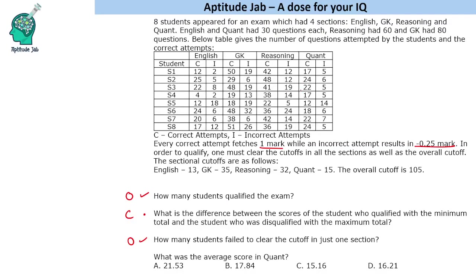The average score in Quant is a light calculation — you can just find correct and incorrect totals and compute it. The score difference question is a heavy calculation. In an examination you should attempt the observation-based and light calculation questions, and skip the heavy calculation question if you are running short of time. Attempt the other three and move ahead.